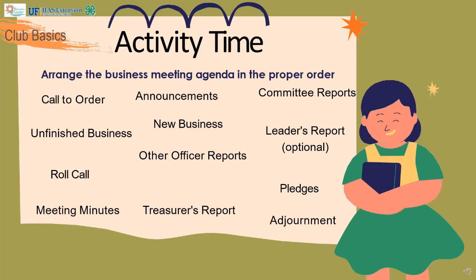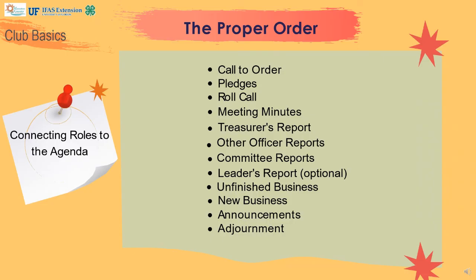Club meeting agendas should be a collaboration between the 4-H leader and the 4-H club officers. The proper order of the 4-H meeting agenda is: call the meeting to order, pledges, roll call by the secretary, reading of meeting minutes, treasurer's report, other officer reports, committee reports, the optional leader's report, unfinished business, new business, announcements, and adjournment.